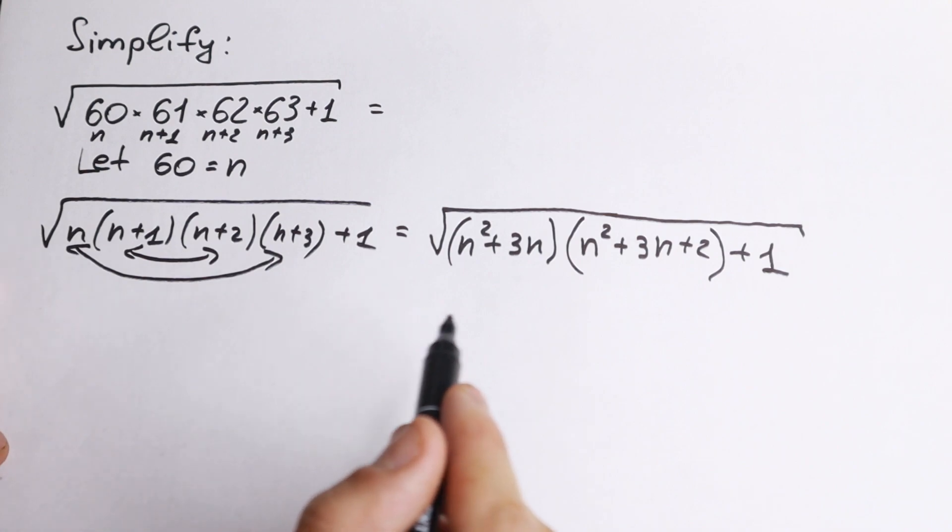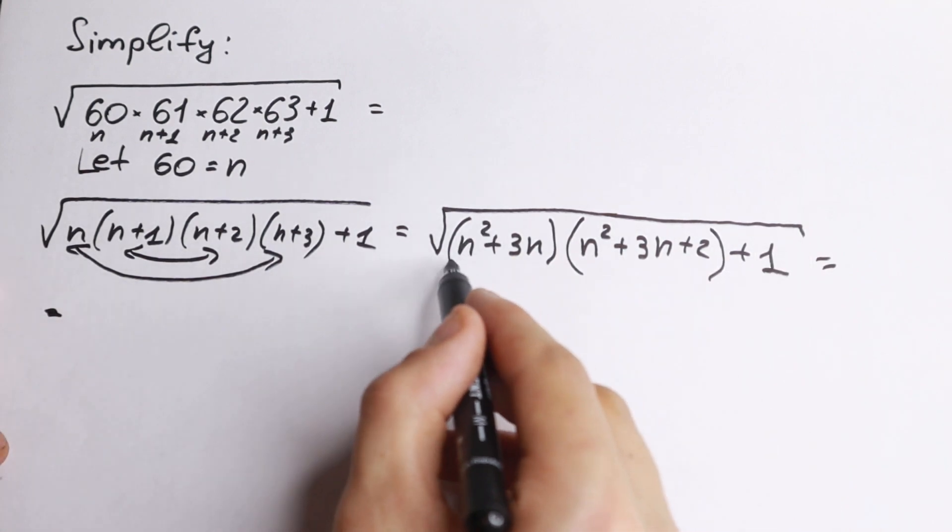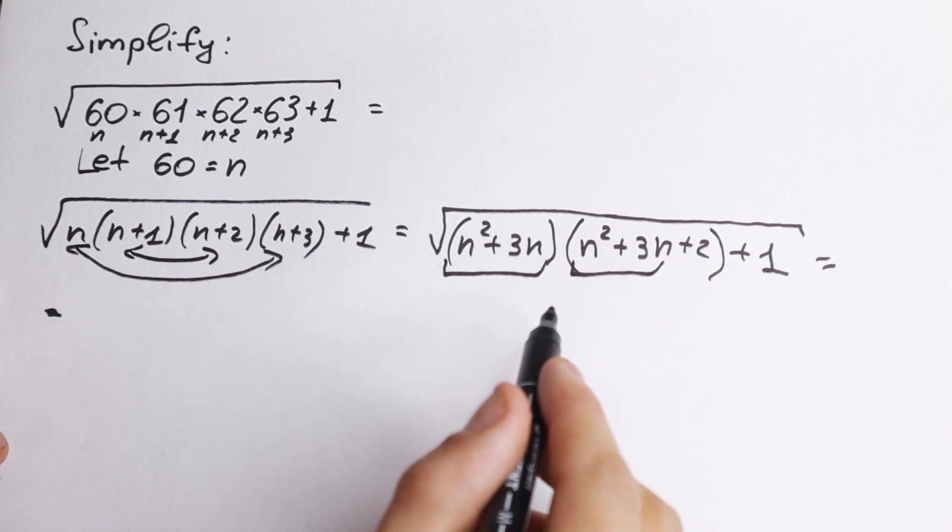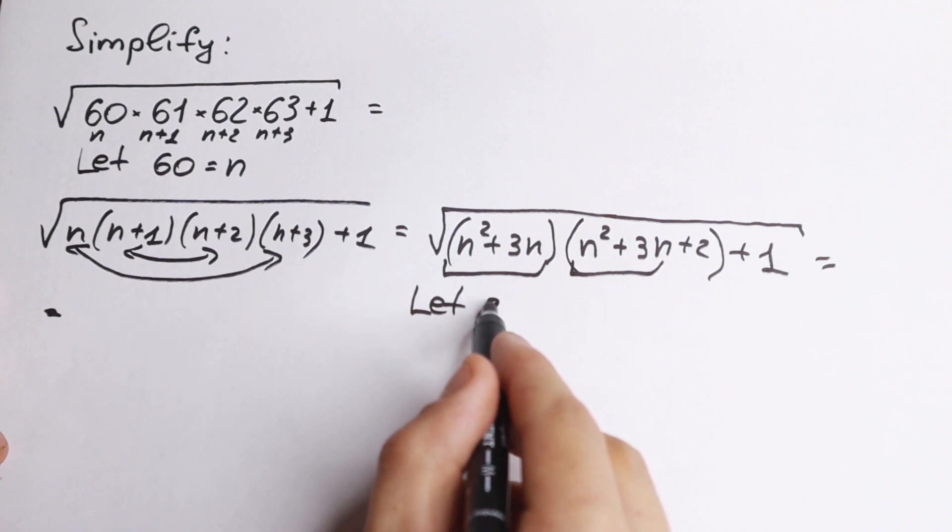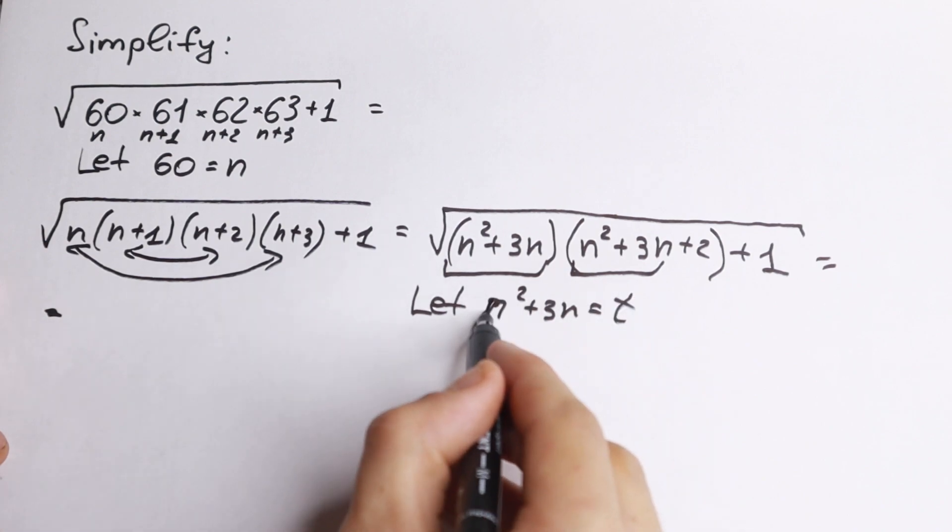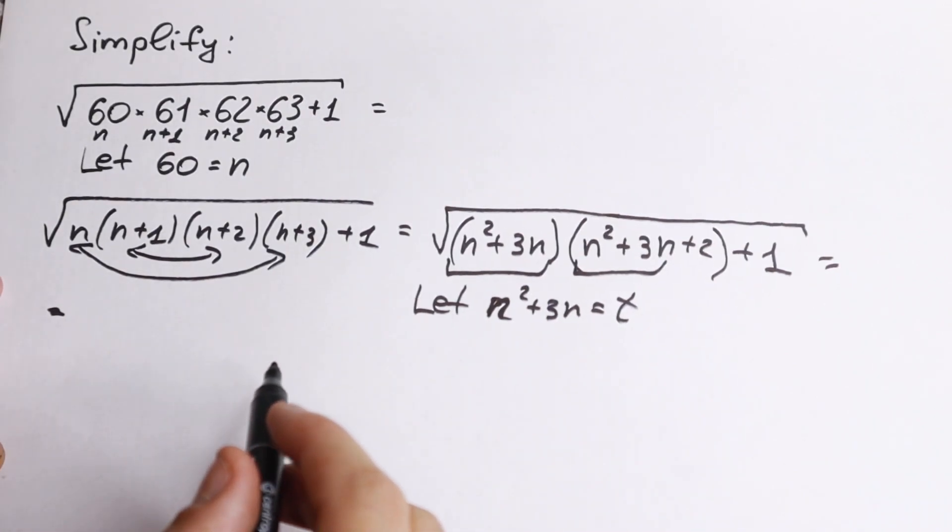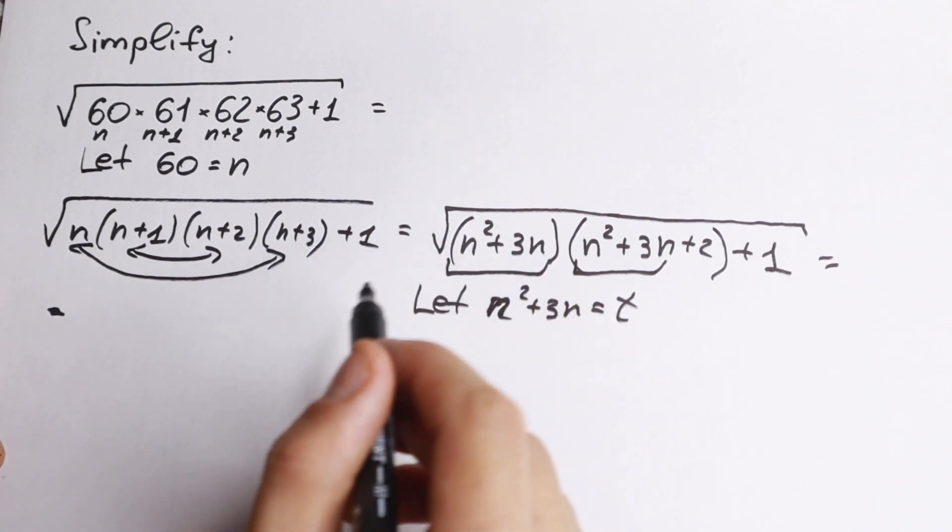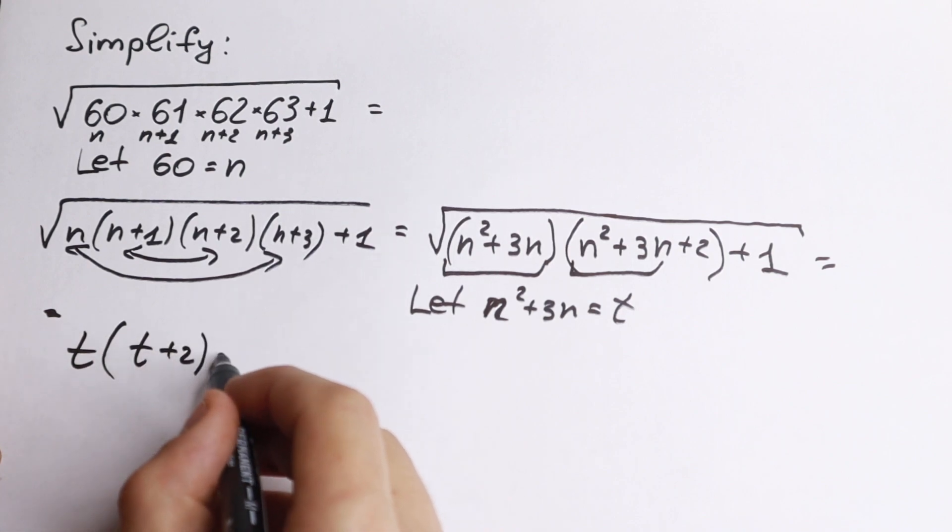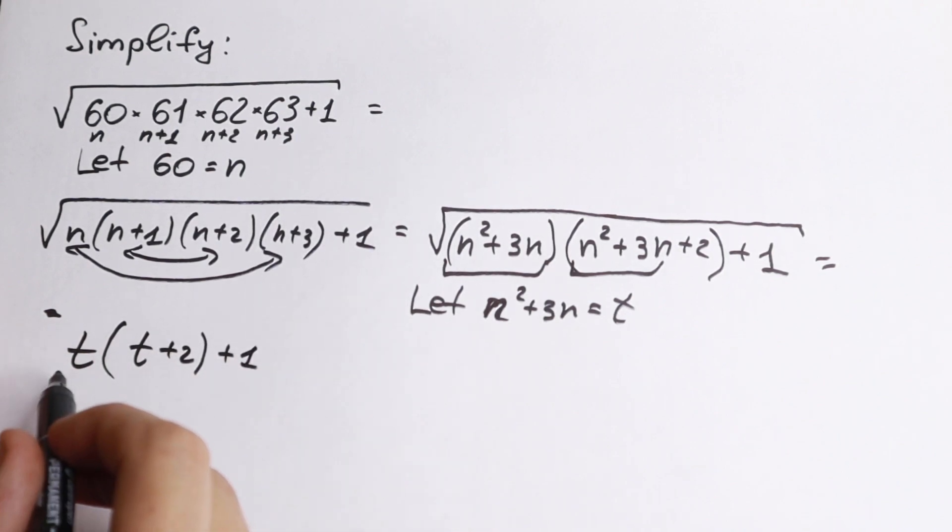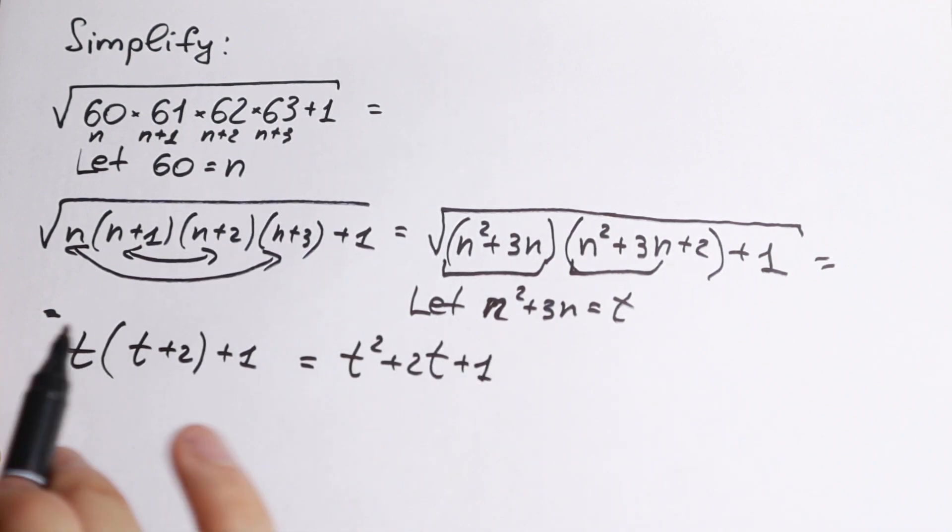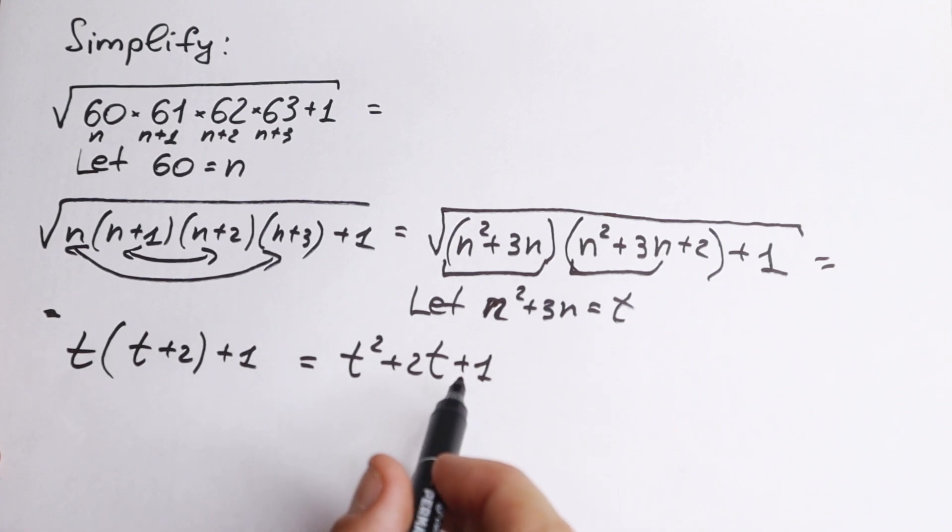And right now if we look closely to this product, we can see that n square plus 3n we have right here and n square plus 3n we have right here. So if we go with substitution, so let this n square plus 3n equal to, for example, t we will have really interesting moment right now because we will have that right here t, only our t, so we have t times right here t plus 2, t plus 2 and plus 1.